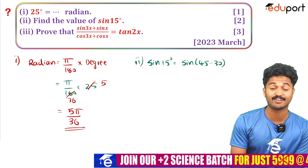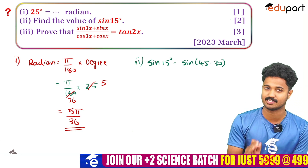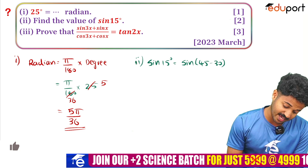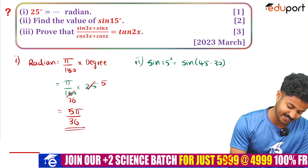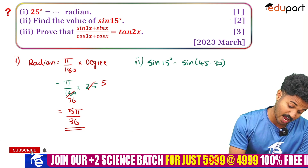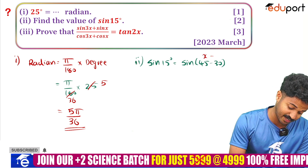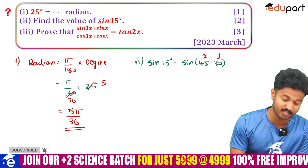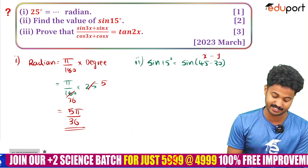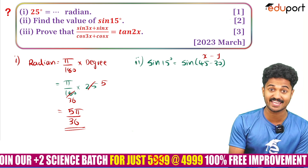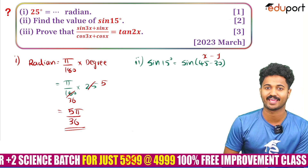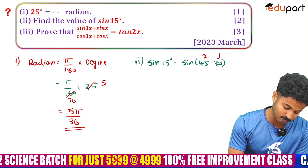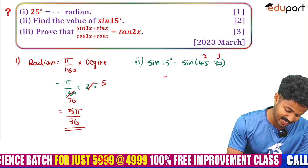The next question: sin(15°) equals dash. We are going to express 15 degrees as 45 minus 30. Now the formula is sin(x − y). We are going to expand sin(x − y).